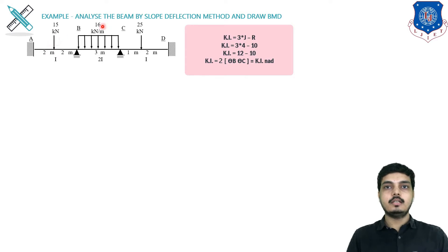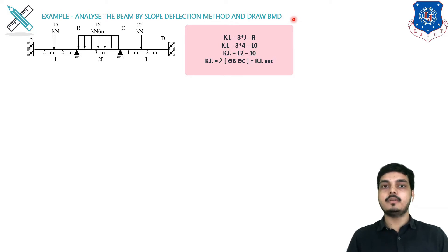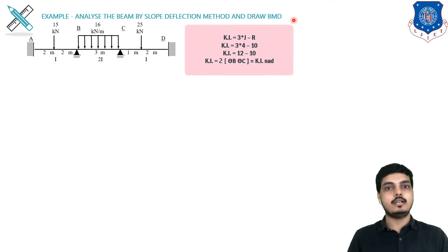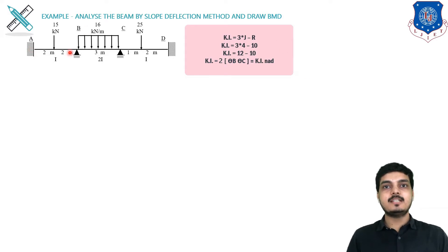Here we want to analyze the beam by the slope deflection method and draw the bending moment diagram. Note that the shear force diagram has not been asked here — in the previous problem it was asked, so we had to draw it. Here only the bending moment diagram is required. There are 3 spans: AB span, BC span, and CD span.